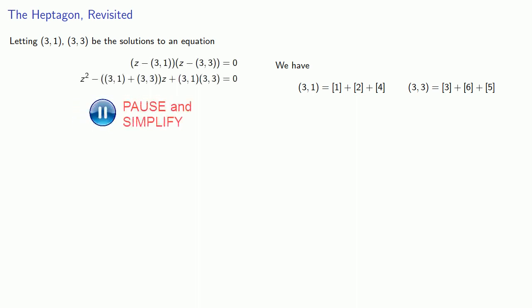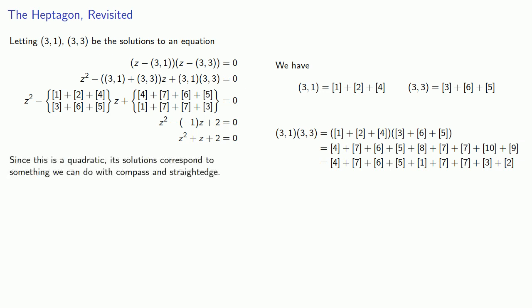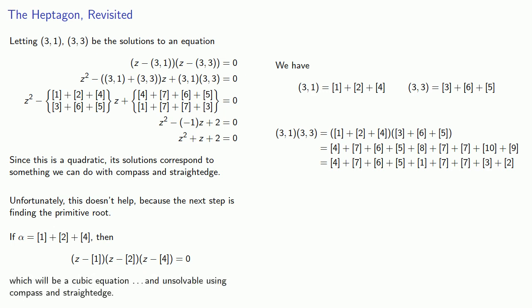And simplify. And since this is a quadratic, its solutions correspond to something we can do with compass and straightedge. Unfortunately, this doesn't help us because there's a next step. In order to isolate one of the roots, suppose one of our solutions is, say, 1 plus 2 plus 4, the individual roots will be the solution to the equation, which will be a cubic equation and unsolvable using compass and straightedge.